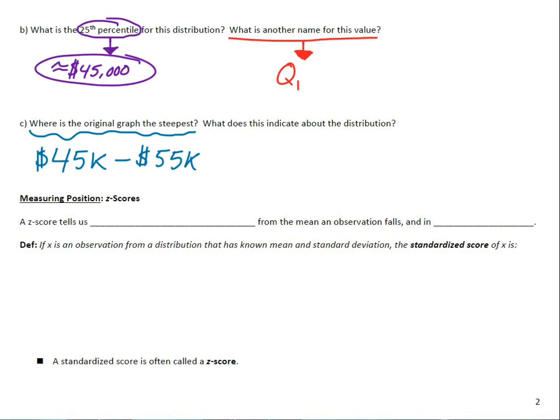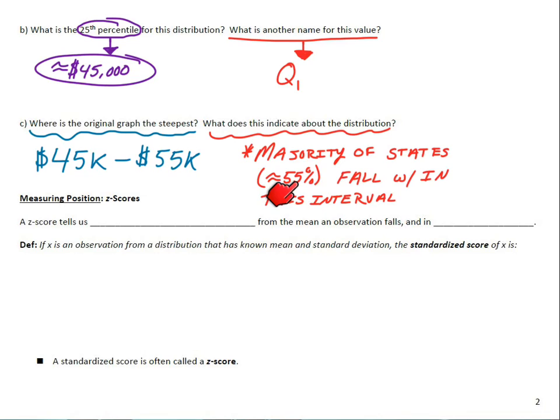So where is it the steepest? Again, I said $45,000 to $55,000. If you saw it as just $40,000 to $55,000, I'd accept that one too. What does that indicate about the distribution? Just over that short little $10,000 interval, that's relatively short, the majority of the states, about 55%, so from 25 to about 80%, that represents 55%. We looked at those percentiles, approximately, fall within this interval. So just over this $10,000 range, that represents about 55% of the states because of the graph, how steep it was over that interval.